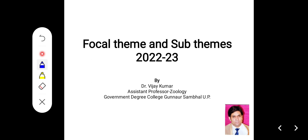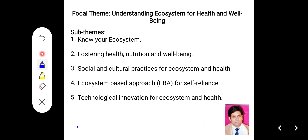National Children's Science Congress is a research-based program held every year on a specific focal theme, which is continued consecutively for two years. Before selecting a local area problem and before starting work, you have to go through the guidebook to understand the focal theme and sub-themes of this year. The focal theme of this year, that is 2023, has been decided as Understanding Ecosystem for Health and Well-Being.